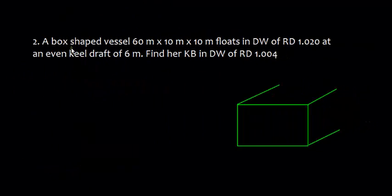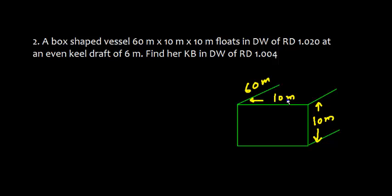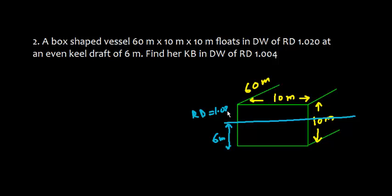Now question number two: a box-shaped vessel is 60 meters long, 10 meters wide, and 10 meters high. It floats in dock water of RD 1.020 at even keel with a draft of 6 meters. We need to find KB in dock water of RD 1.004. First we need to find the displacement.